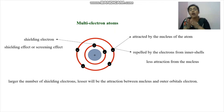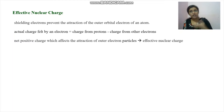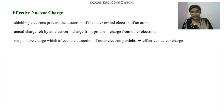The greater the number of inner electrons, the lesser the attraction between the nucleus and the outer orbital electrons, because some of the positive charge is cancelled by the repulsion from the negatively charged inner electrons. In a single-electron system, the full charge of the proton would be felt. But with shielding electrons present, they prevent some of that attraction, decreasing the actual charge felt by each outer electron.